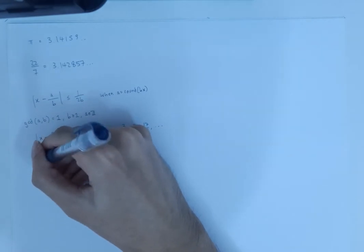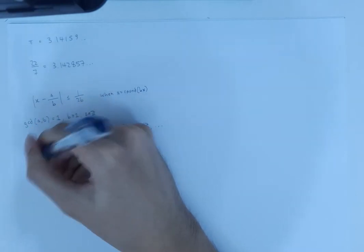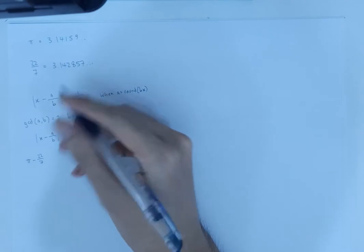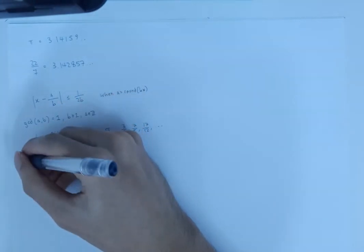So 22 over 7, pi minus 22 over 7, so x equals pi, a equals 22, b equals 7, and we can verify that the greatest common divisor of 22 and 7 is 1, b is positive, and a is an integer.